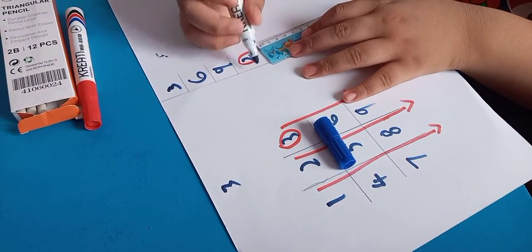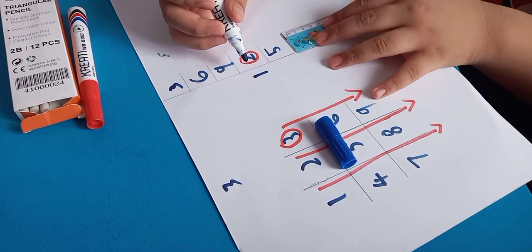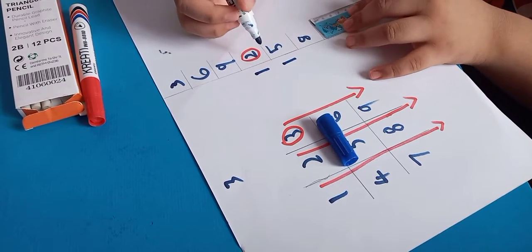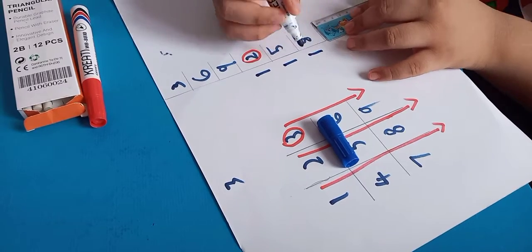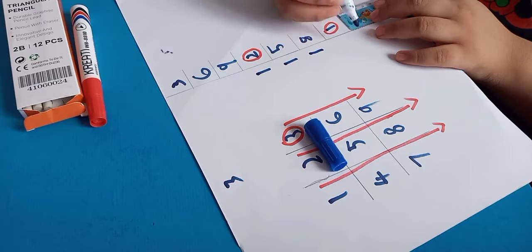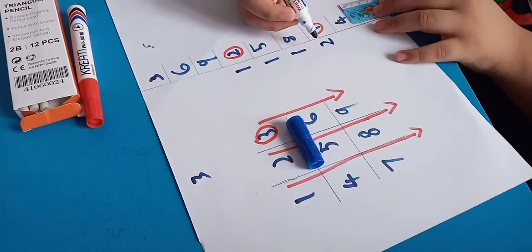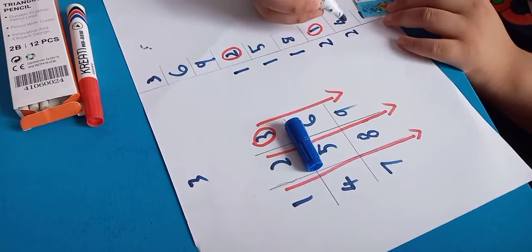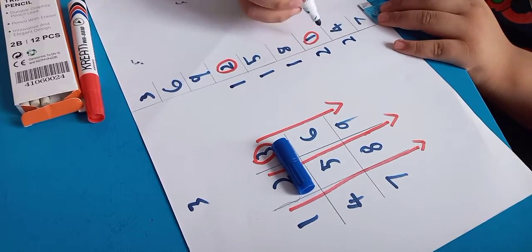How many circles are there? One. How many circles are there? One, two.